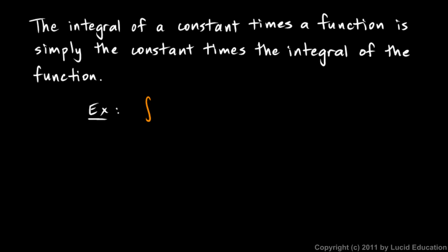All we're saying is this. The integral, in this case we'll have the integral of 7x cubed dx. So this is a constant, 7, times a function, x cubed. You can certainly think of that as a function. So we have a constant times a function.